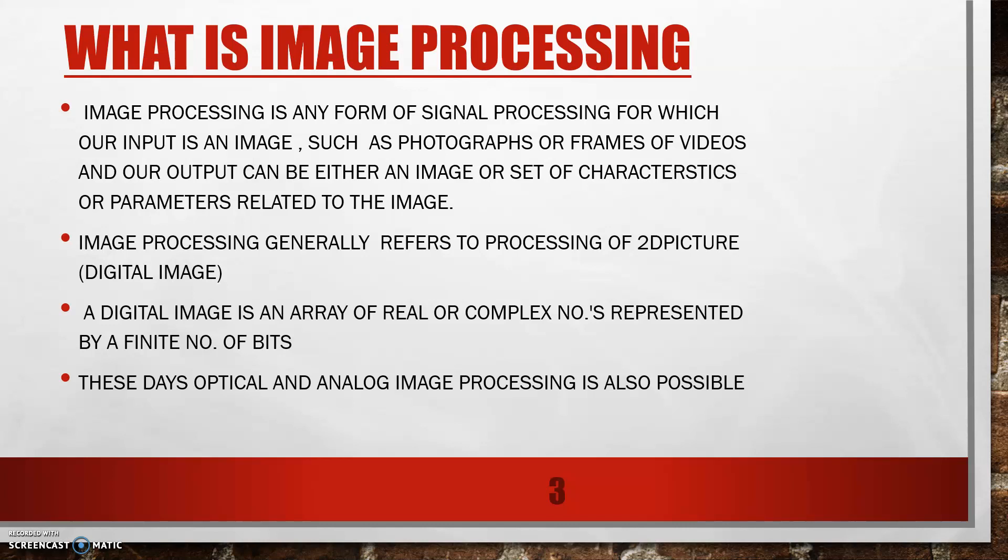Image processing is the use of a digital computer to process digital images through an algorithm, which means that the image which we take is processed using computer algorithms to produce something productive and useful. Image processing generally refers to the processing of 2D pictures, which actually means digital images.